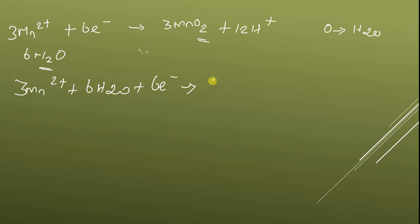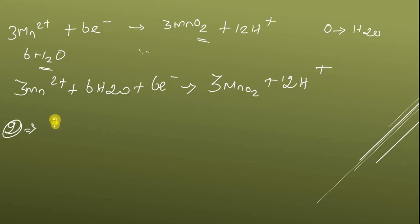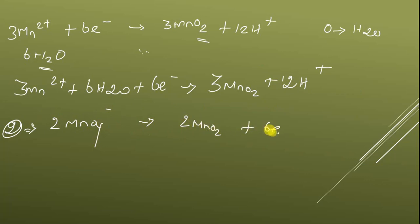So the oxidation half equation is written as: 3Mn2+ + 6H2O + 6e- → 3MnO2 + 12H+.